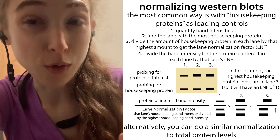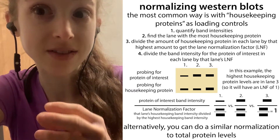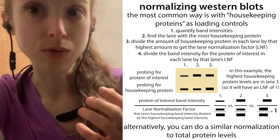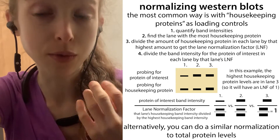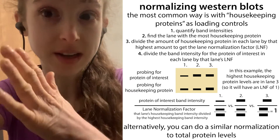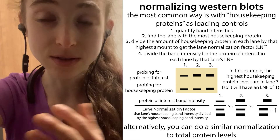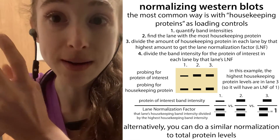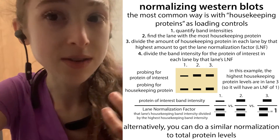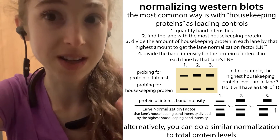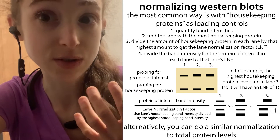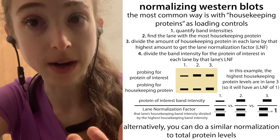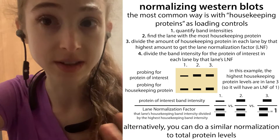Another problem with housekeeping genes is that sometimes they're expressed a lot more than the thing you're interested in. In order to have enough signal of your target, you need to load a lot of sample, and this can oversaturate — you reach past the linear range of detection for your housekeeping protein. You want your housekeeping protein to be in a linear range so you can actually tell differences in signal. This is a problem if you have a lowly expressed target, because you have to load a ton of sample. You may have to choose your normalization protein accordingly.